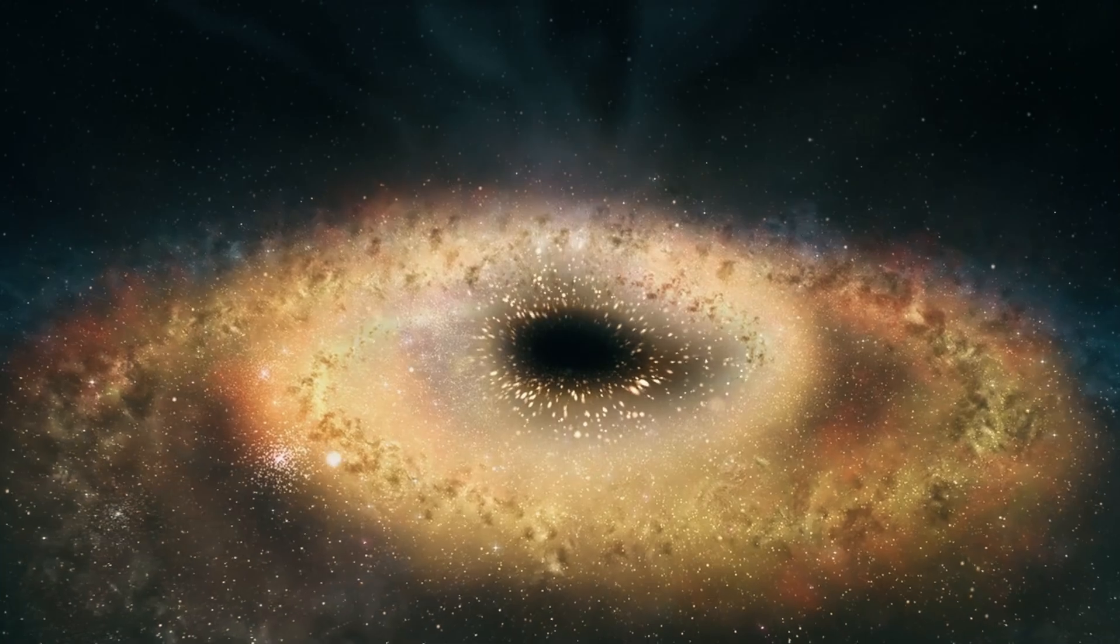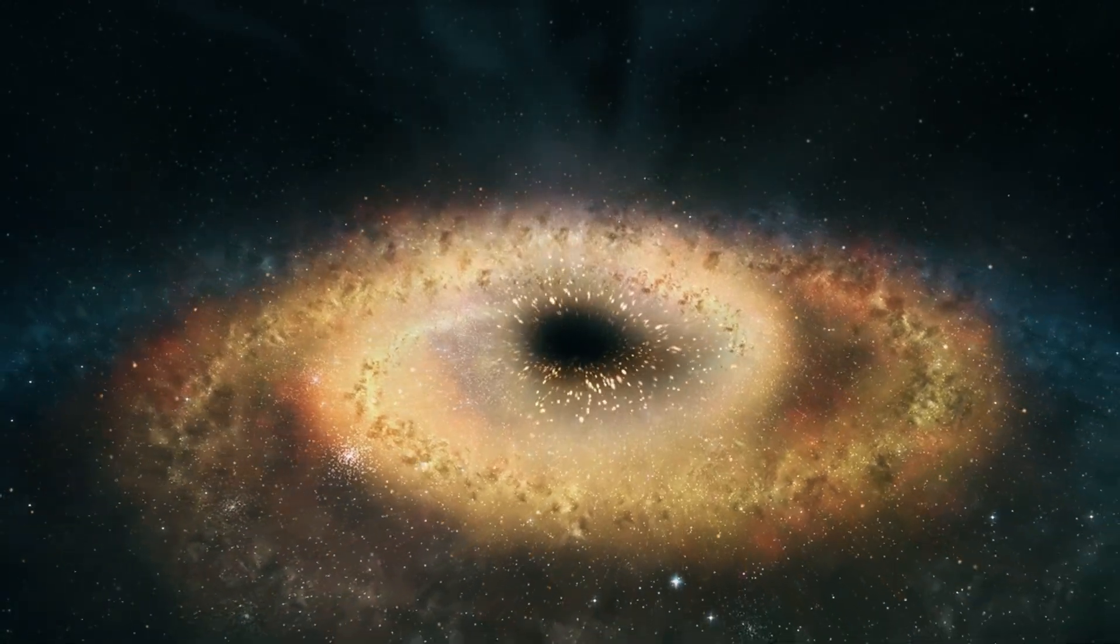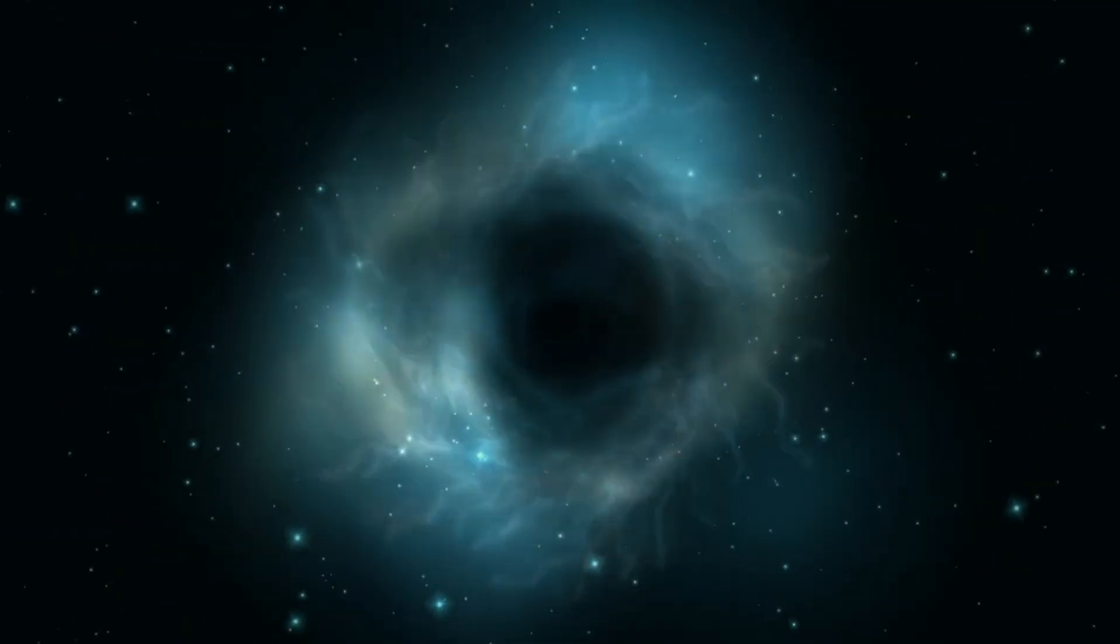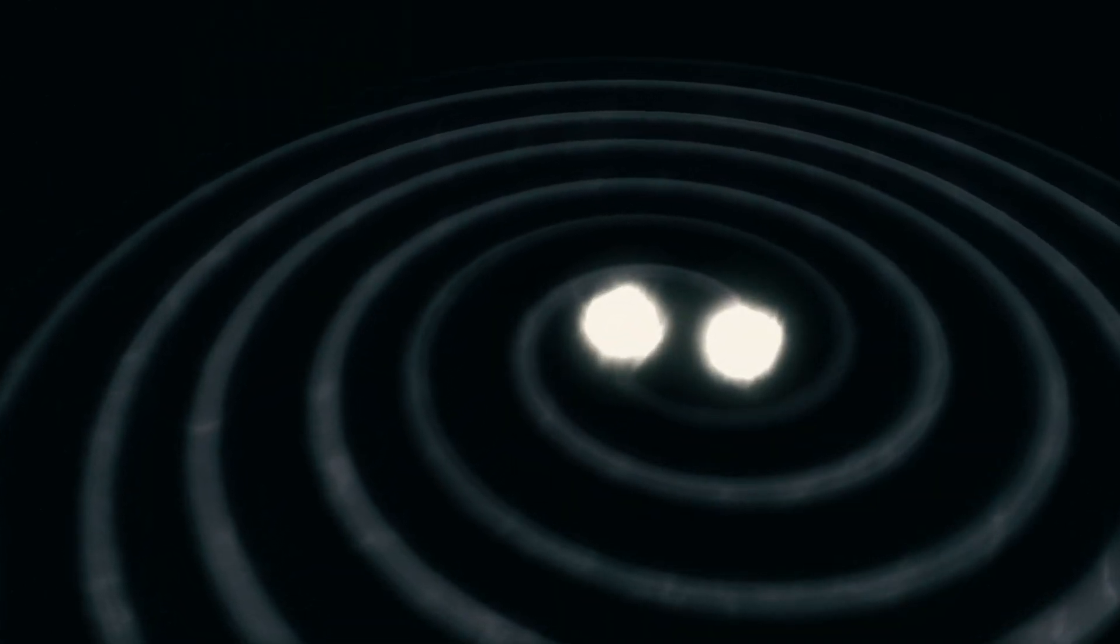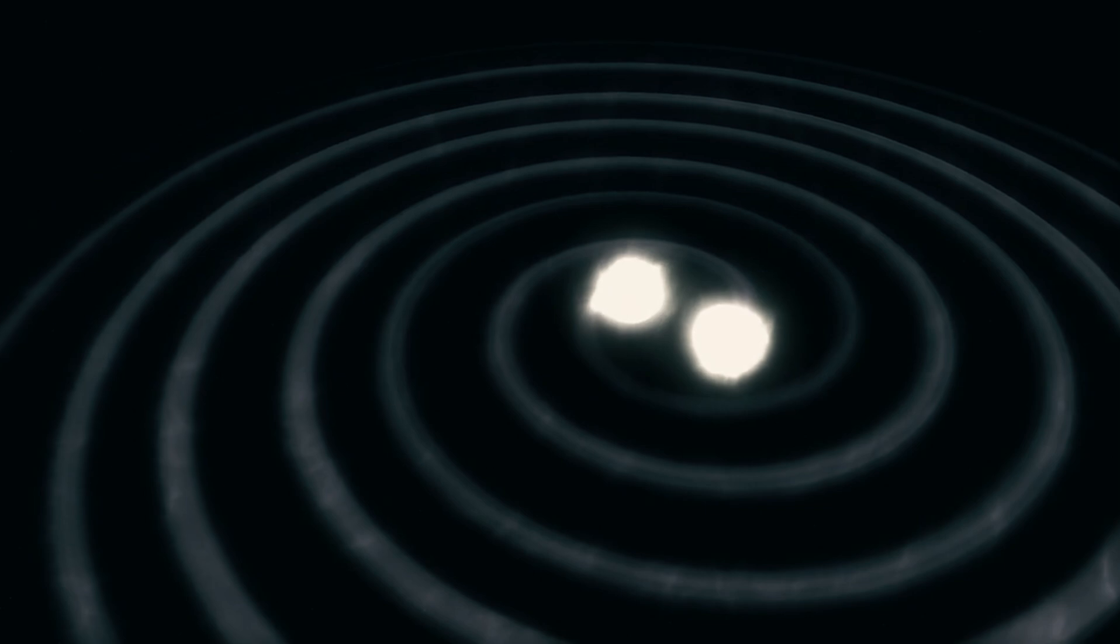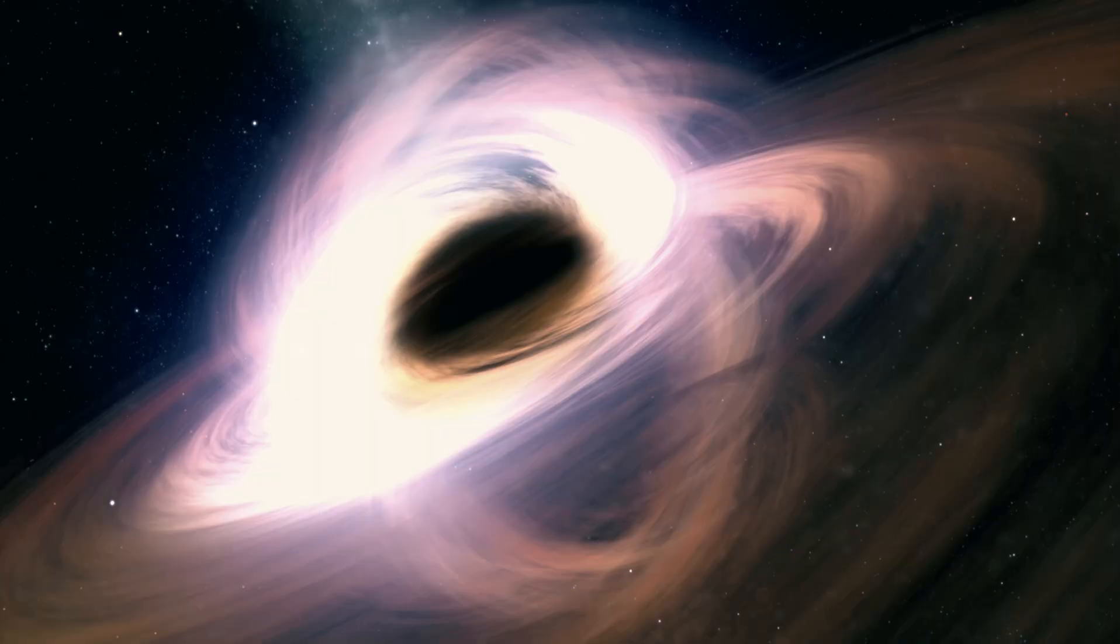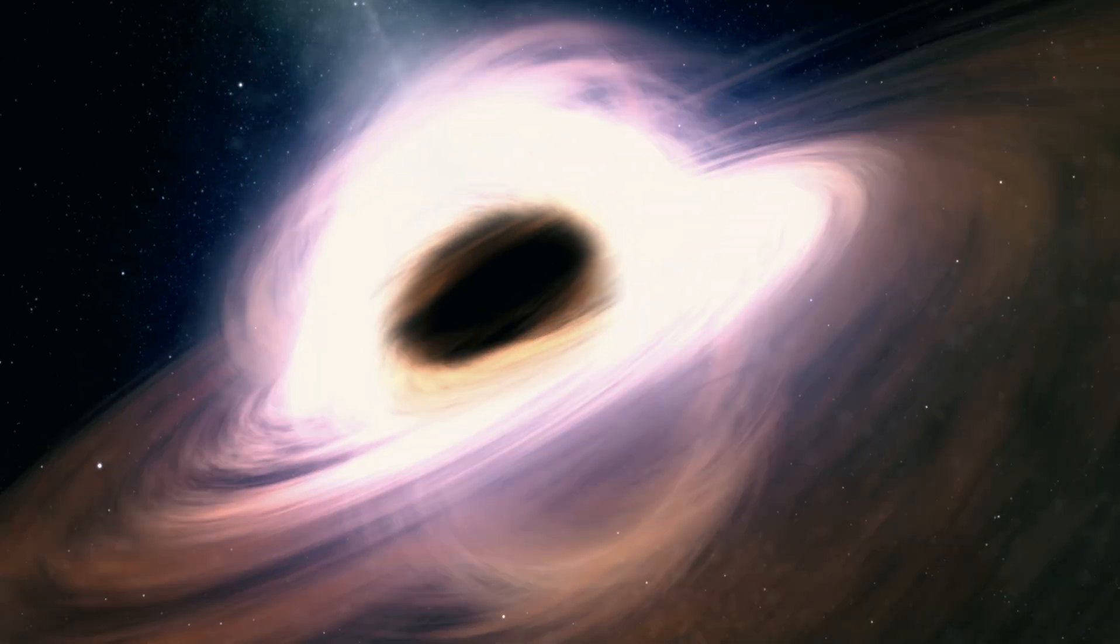Supermassive black holes will start to strongly produce gravitational waves when they are within one light-year of one another. These waves will continue to radiate orbital energy until the black holes merge fully. The gas that the merging black holes absorb could form an active galactic nucleus. There would be an incredible amount of energy released if this occurred.